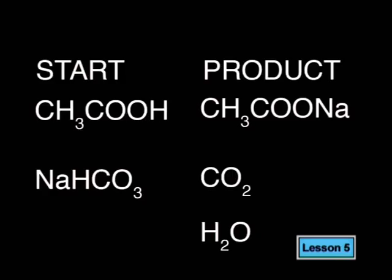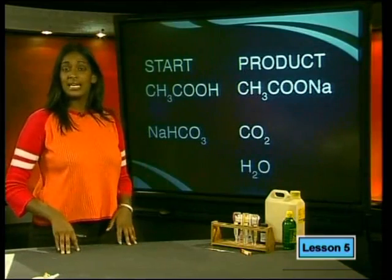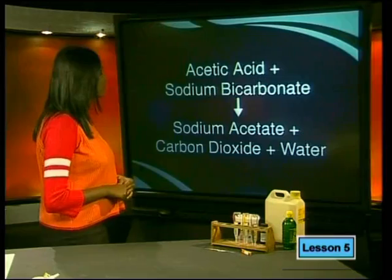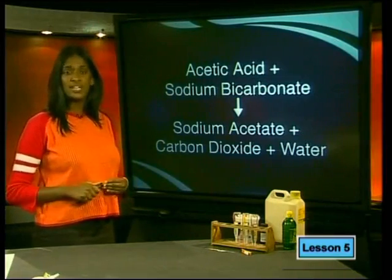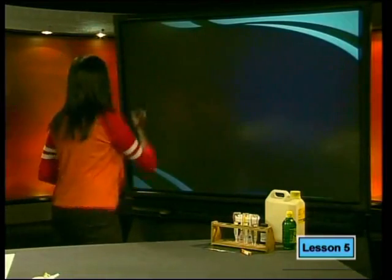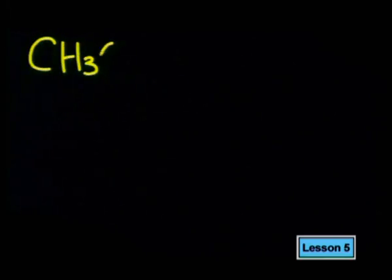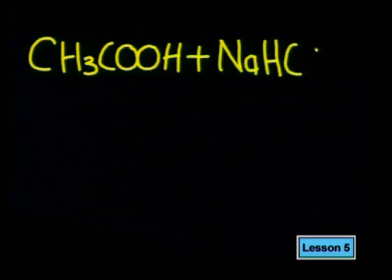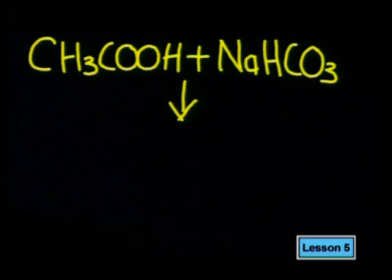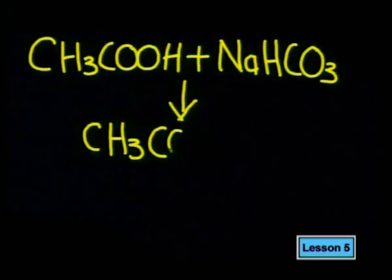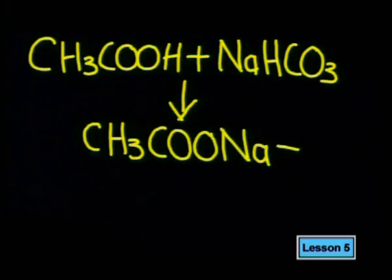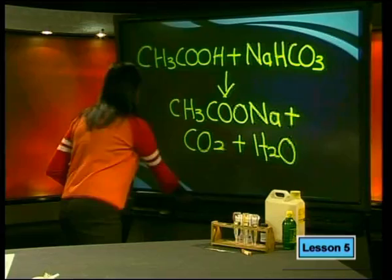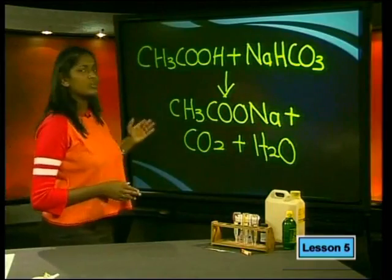Let's recap the products and write the equation. Acetic acid plus sodium bicarbonate react to form sodium acetate plus carbon dioxide plus water. The chemical equation is: CH₃COOH + NaHCO₃ → CH₃COONa + CO₂ + H₂O. This equation is balanced.